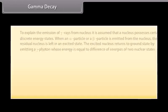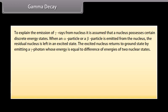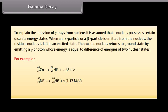Gamma decay: to explain the emission of gamma rays from the nucleus, it is assumed that a nucleus possesses certain discrete energy states. When an alpha or beta particle is emitted from the nucleus, the residual nucleus is left in an excited state. The excited nucleus returns to the ground state by emitting a gamma photon whose energy equals the difference of energies of two nuclear states. For example, Cobalt-60 (atomic number 27) transforms into nickel (atomic number 28) in its excited state, which then returns to ground state by emission of two successive gamma photons of energies 1.17 MeV and 1.33 MeV.